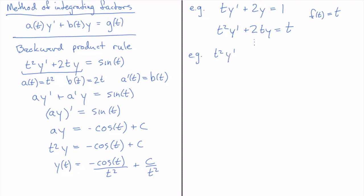Let's do another one: t²·y' + 4ty = 1/t. Think about what function you can multiply through by so that the left-hand side is a perfect product rule. I've got t² here and 4t here. The derivative of t² is 2t, so I don't have the right coefficient 4. Imagine if I had t^n — the ideal situation would be if I had n·t^(n−1) next to the y. I need an n in front of that term if I have t^n out front.